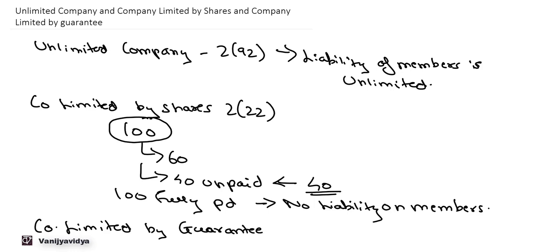Now, as the name itself suggests, as per Section 221 of the Companies Act 2013, in a company limited by guarantee, the liability of the members is limited by a memorandum. This memorandum contains a guarantee given by each member, and to the extent of that guarantee the liability of the members will be limited. This liability may be different for different members as they have accepted in the memorandum.